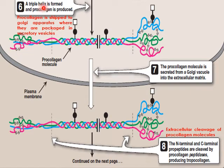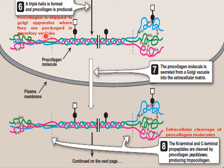A triple helix of collagen is formed, called pro-collagen. This pro-collagen is then sent to the Golgi apparatus, where it is packaged into secretory vesicles and then secreted into the extracellular matrix.